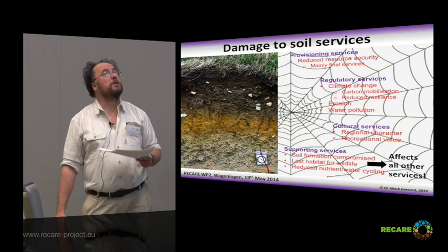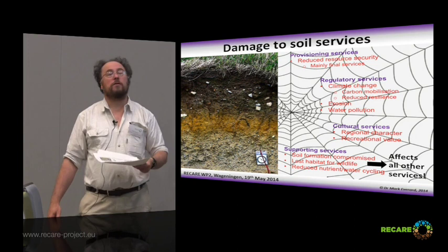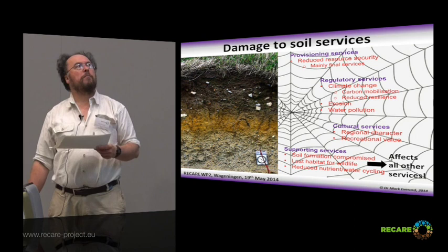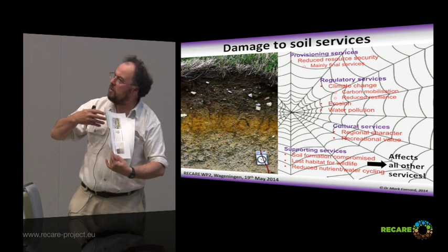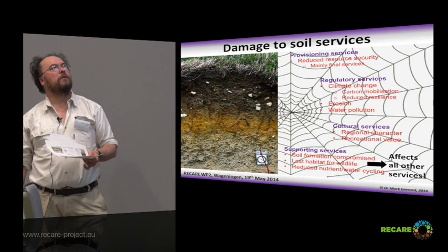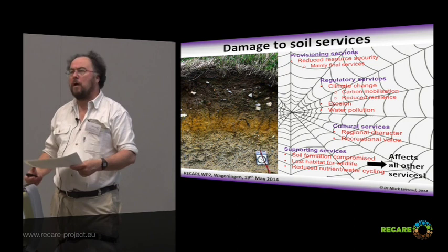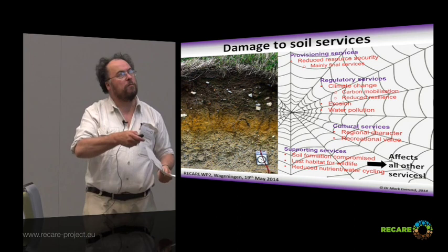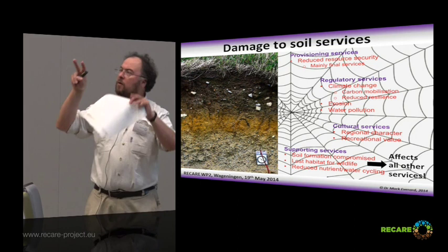Damage to soil services. If we damage the soil: soil formation is compromised, soil quality, soil regeneration. We lose habitat for wildlife and reduce contributions to cycling. That has serious implications for climate, reducing overall resilience. We make it far more prone to erode, which can contribute massively to water pollution. To protect water, I know I have to protect land — it's a cascade. Damage the soil: damage regional character, recreational value, and reduce resource security. The important thing is to recognise that everything is connected. Every increment of harm to the supporting service has ramifications for all other services. One of the key messages of ecosystem services is in that word 'system' — the connectedness of things.